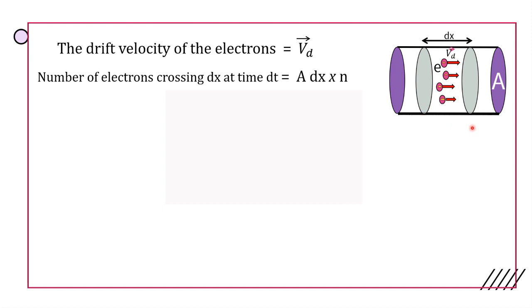What is the volume? A into dx is the volume, and N is the number of electrons per unit volume.